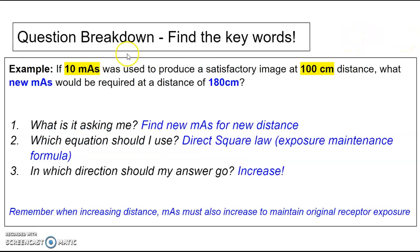So let's break the question down. Let's find the keywords. 10 mAs was used to produce an image at 100 centimeters. So we have an original mAs, an original distance. And it's asking me what new mAs would be required at a new distance. So what is this question asking me? To find the new mAs for the new distance. Which equation should I use? I'm going to use the direct square law, also referred to as the exposure maintenance formula.